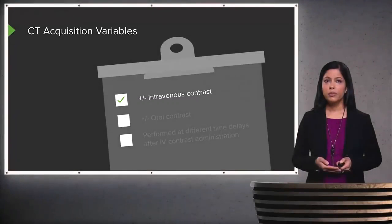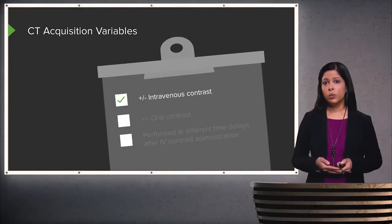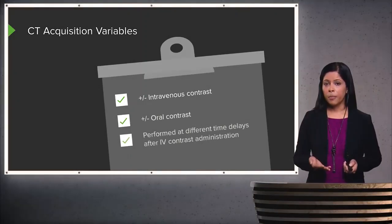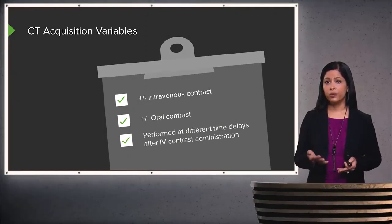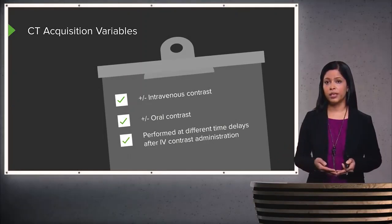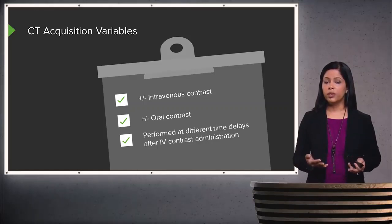What are some different acquisition variables? We can use intravenous contrast, oral contrast, and we can perform the CT scan at different time delays after intravenous contrast administration. Let's look at when each of these would be useful.